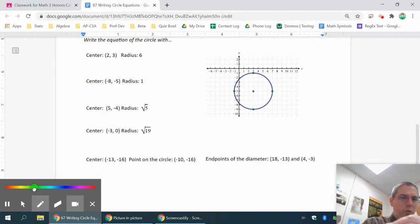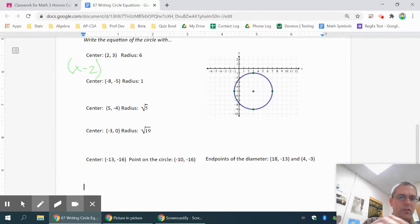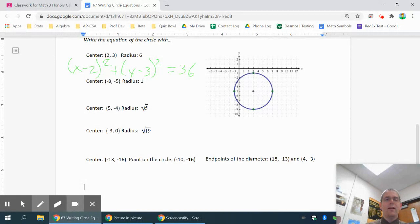Remember we said we switch signs to what goes in the parentheses, so the x-coordinate of the center is going to go in there with the x. Same thing we were doing on the last video, just backwards. And then switch signs of the y-coordinate, so that's y minus 3. And then I have 6 squared is 36.